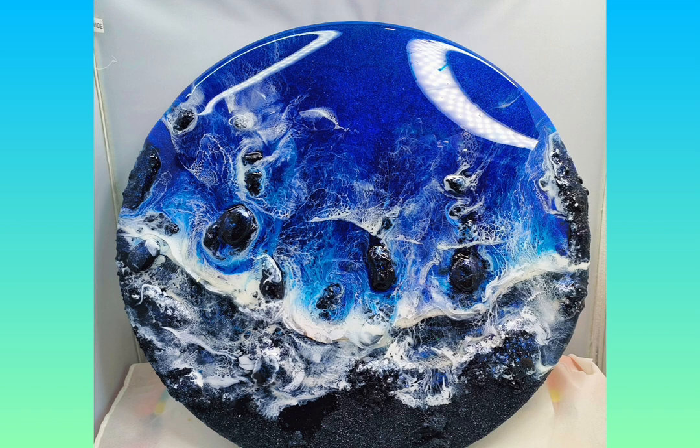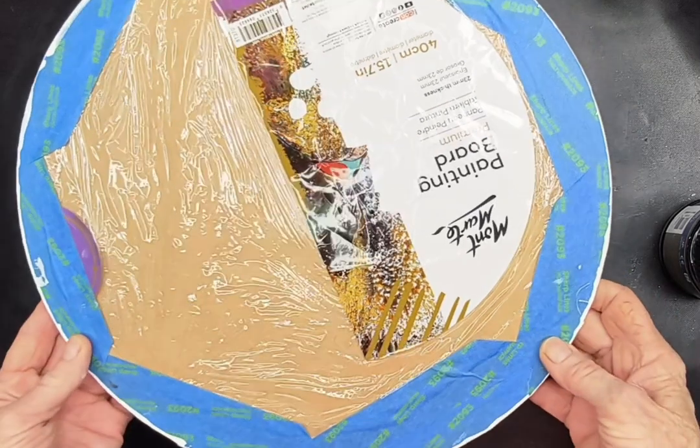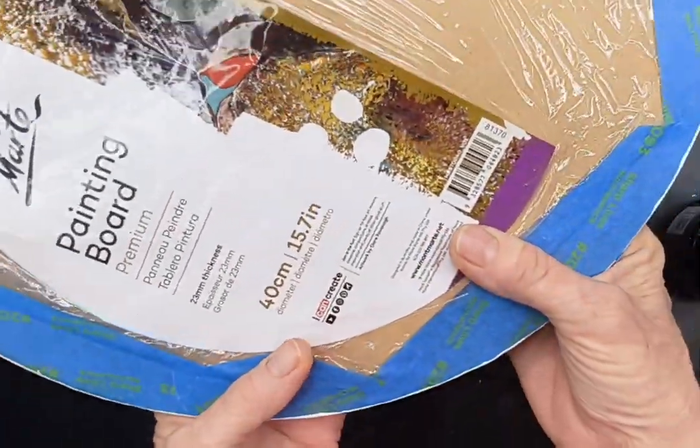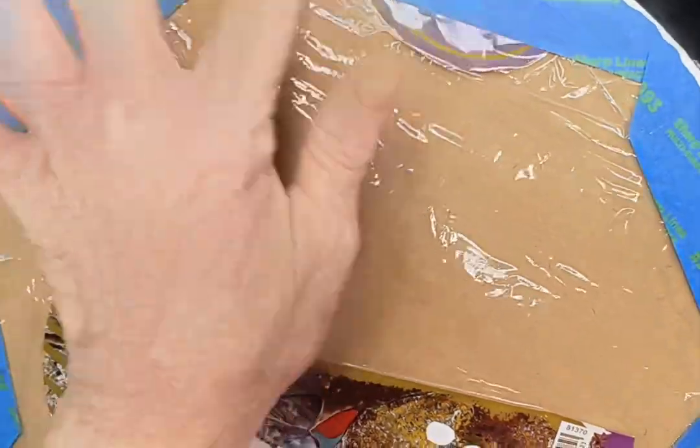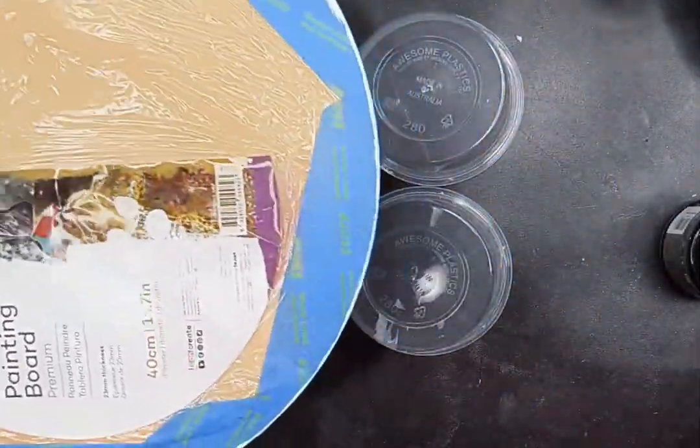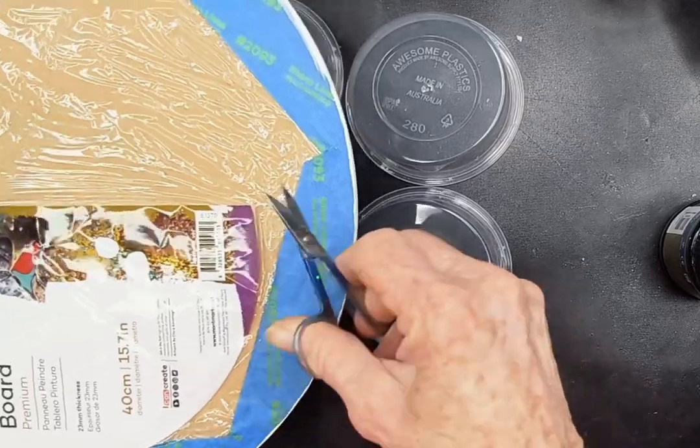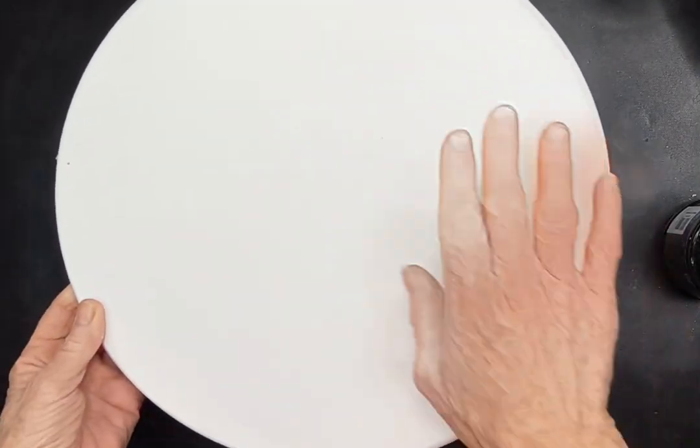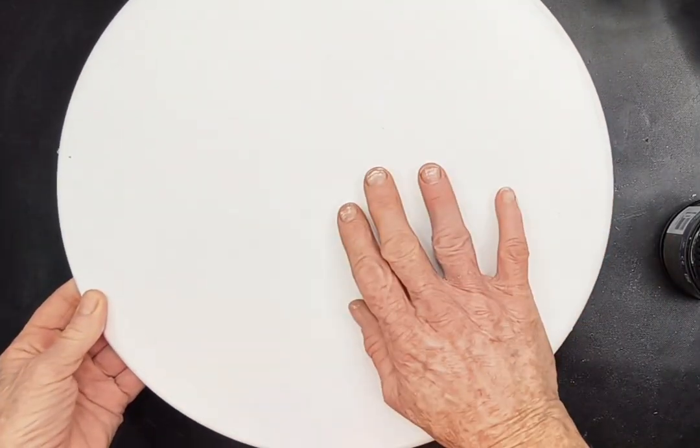To begin with I prep my board and protect the back with some plastic. This is not a Mont Mont board but it is a 40 centimeter wooden round. I put painter's tape around the edges and trim it close with scissors. On the front I've done two coats of white gesso which will provide a slightly rough surface for the resin to stick to.